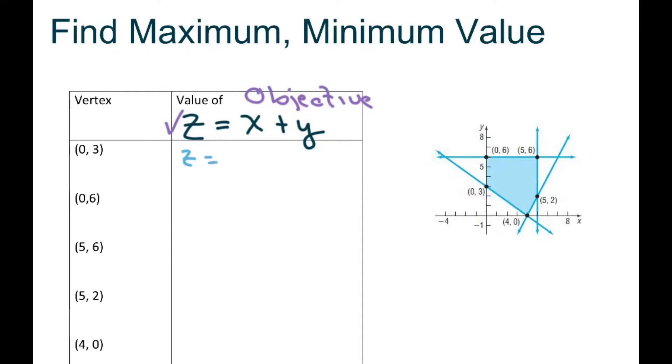z equals 0 plus 3, which equals 3. And for this one we have z equals 0 plus 6, equals 6. And for this one we have z equals 5 plus 6, equals 11.